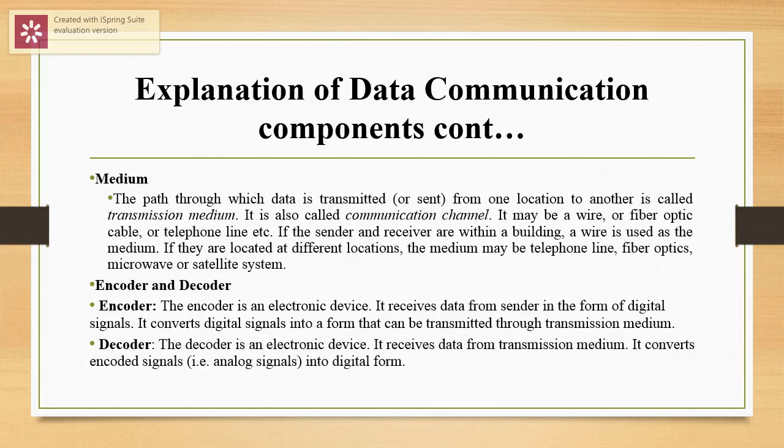The media. The path through which data is transmitted or sent from one location to another system is called transmission media. It is also called a communication channel. It may be a wire, a fiber optic cable, or a telephone line. If the sender and the receiver are within a building, a wire is used as the media. If they are located at different locations, the media may be telephone line, fiber optics, microwave, or satellite systems.